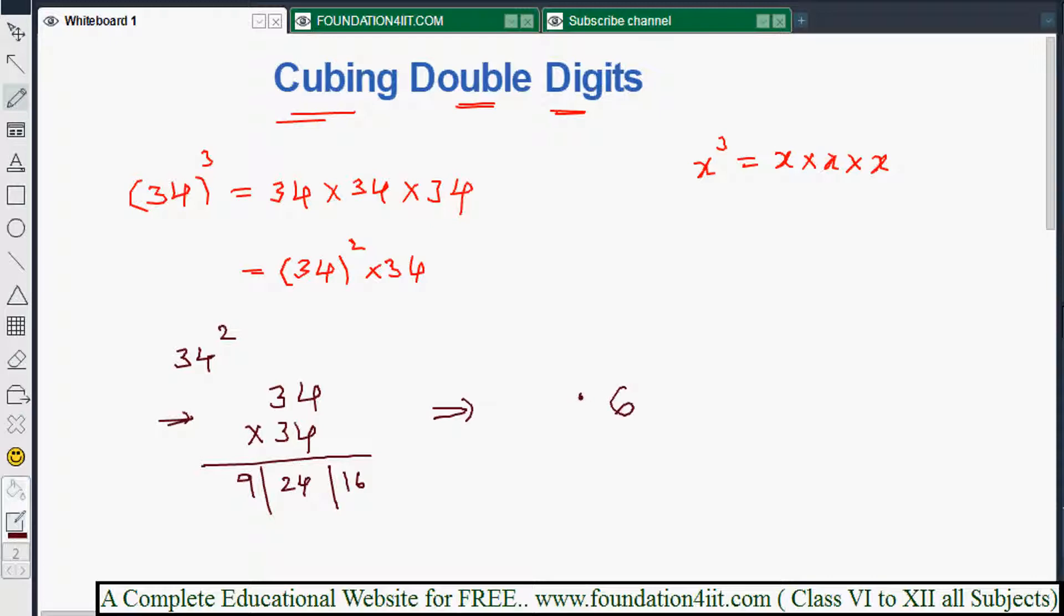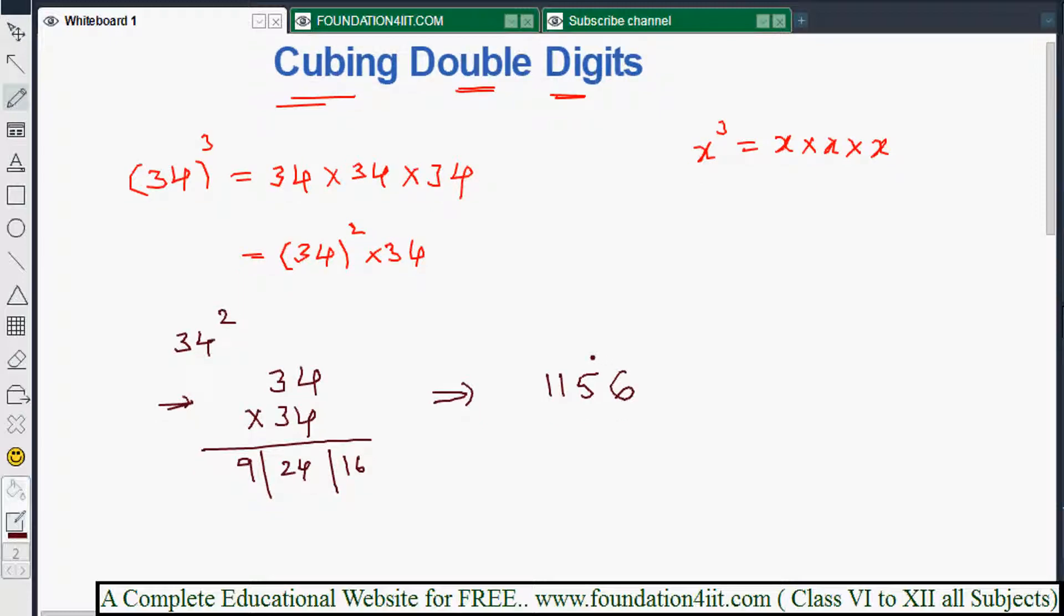5 plus 1 plus 4, and 2 plus 9 is 11. So balancing rule applied, 11 is 6. Now this number I need to multiply with 34, with 34.